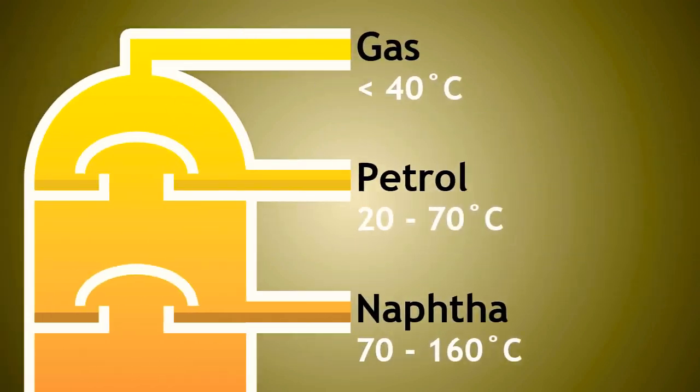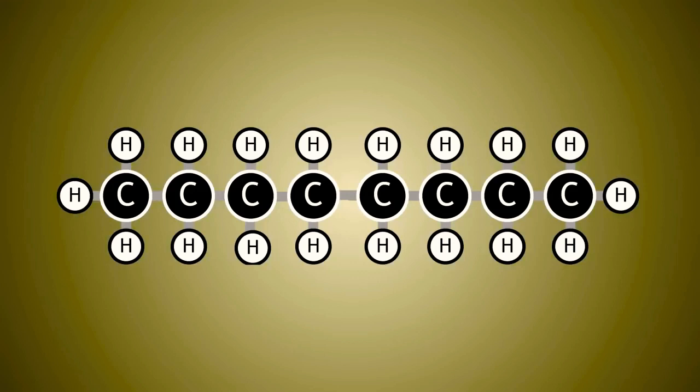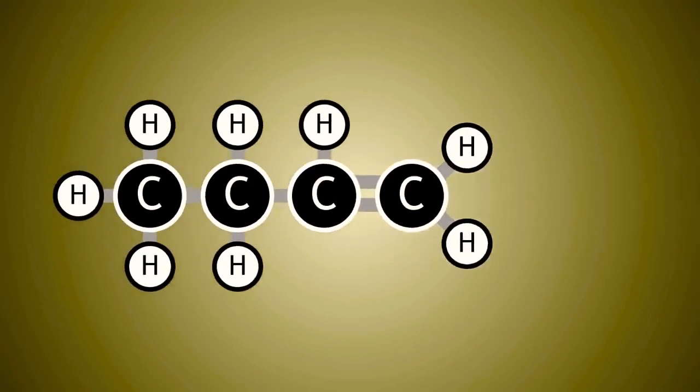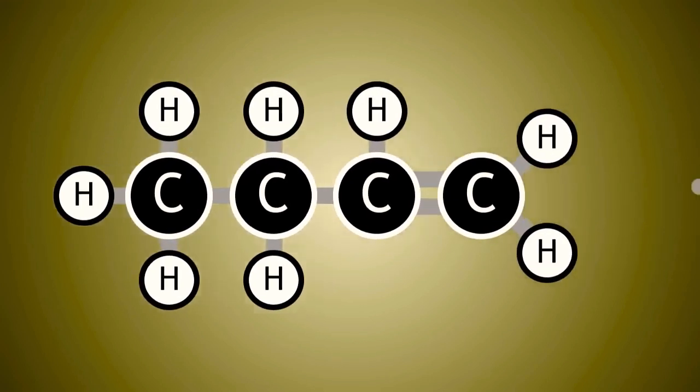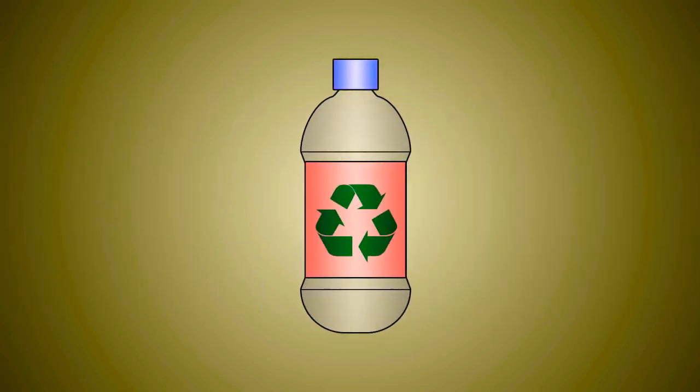Naphtha is not such a useful fuel but it is a valuable source of organic molecules which can be cracked to make more fuels or form alkenes. Alkenes can be turned into polymers and polymers can make plastics which are used in our everyday lives.